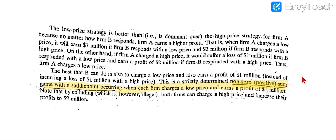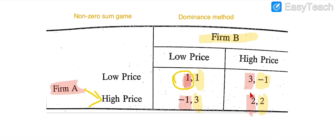This is the case where at the low price each firm earns a profit of 1 million dollars, and this is actually the saddle point for both firms. But if both firms collude — which is actually illegal — both firms can charge a high price and increase their profit to 2 million dollars each. However, this collusion is illegal.